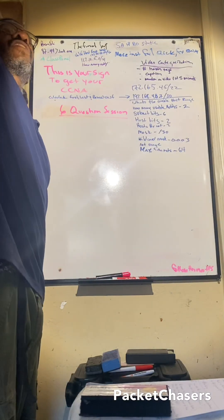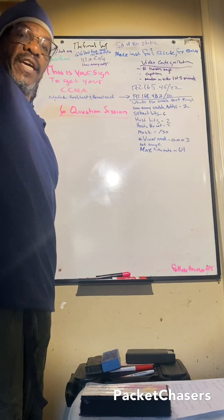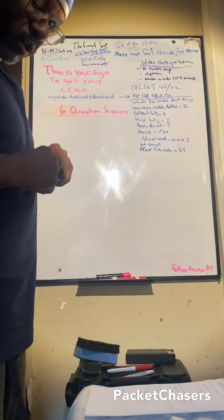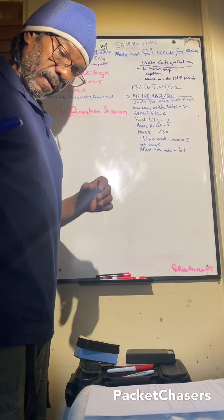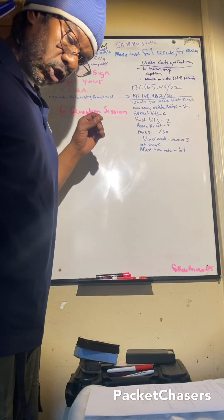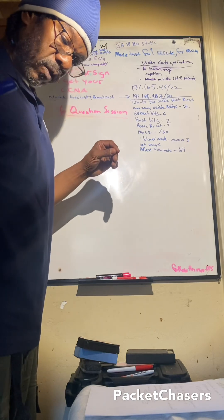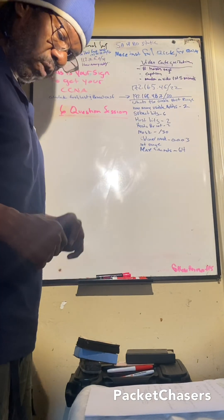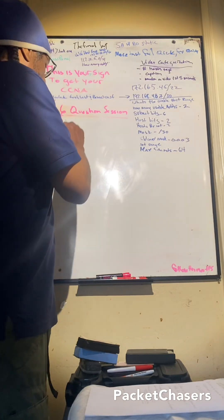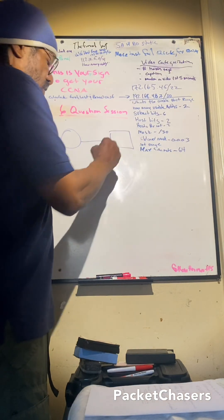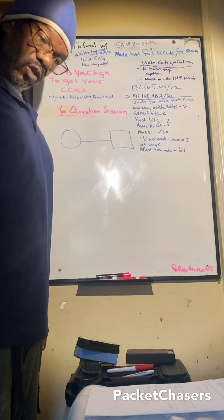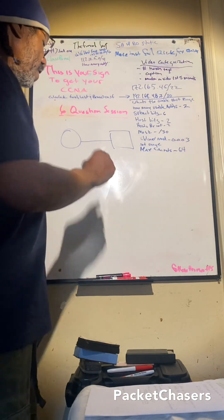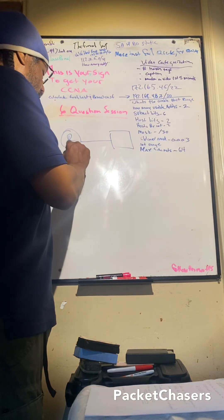Shout out to all my packet chasers — appreciate y'all. Question number six: what interface on a Cisco router processes traffic for the native VLAN if connected to a switch?